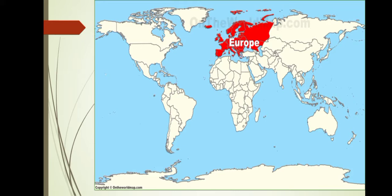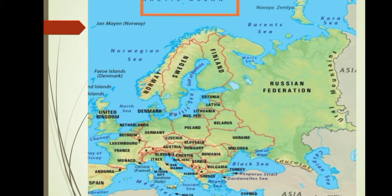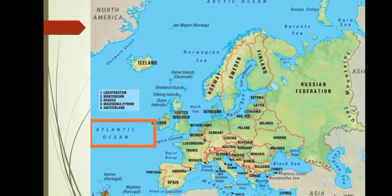Let us now identify the boundaries of Europe. To the north of Europe, there lies the Arctic Ocean. This ocean is frozen throughout the year, and it forms the northern boundary of Europe. To the west of Europe, there lies the Atlantic Ocean, which separates the two continents, Europe and North America.